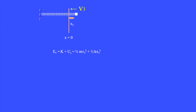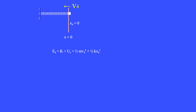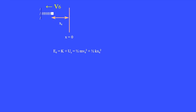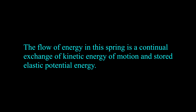At moment 3, the energy is E3, and at moment 4, the energy is E4. The stretch at moment 4 is X4 equals zero, so there is no elastic energy stored in the spring. The total mechanical energy is ½MV4² — entirely kinetic energy of motion. Then E5 at moment 5 and E6 at moment 6. The flow of energy in this spring is a continual exchange of kinetic energy of motion and stored elastic potential energy.